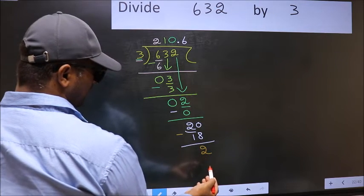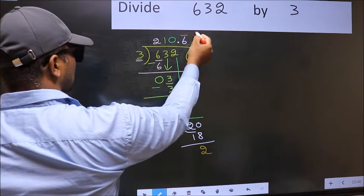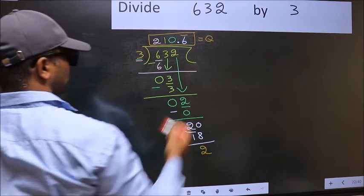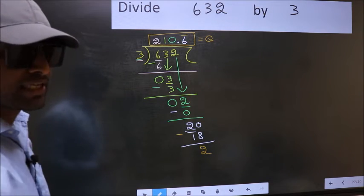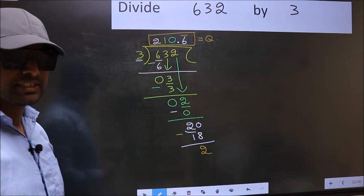We got 2 again. That means you get a bar on this number. So this is our quotient. Did you understand where the mistake happens? You should not do that mistake.